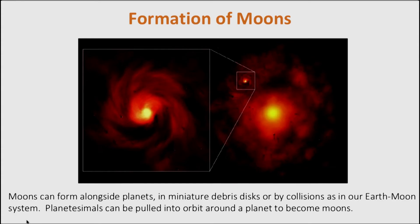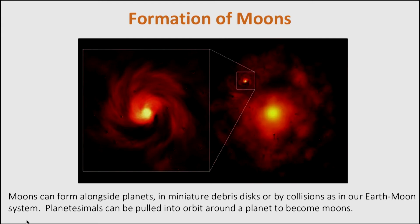What about moons? How do they form, and what can we learn about their properties? Essentially, moons form in miniature versions of the formation of the solar system itself. They form alongside planets in miniature debris disks or by collisions, and also by accretion, the same way the planets in the solar system form. We can imagine the moons of the giant planets — each of which has dozens of moons — being formed in a scaled-down version of the formation of the solar system itself. Planetesimals can also be pulled into orbit, so moons can also form by sweeping up material from slightly further away over time in the debris disk.